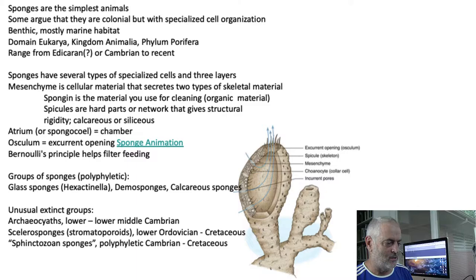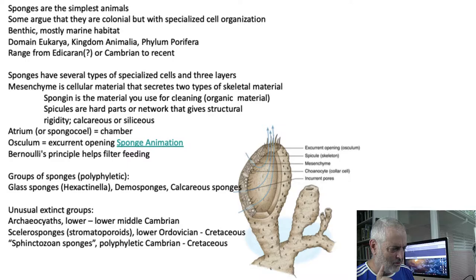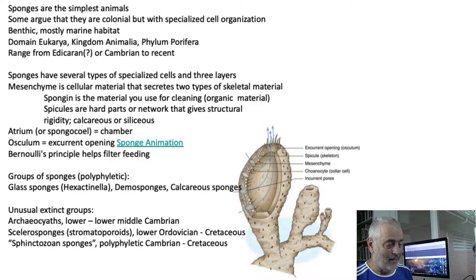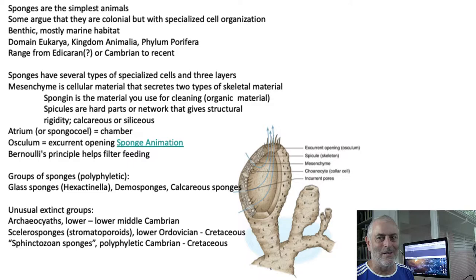Sponges are among the simplest animals. They are colonial with specialized organization, and they mostly live on the seafloor. There may actually be some freshwater sponges — I'm not quite sure. They belong to the eukaryotes; they're animals, not plants. They can have some algae growing around them or on them, but usually they don't like that because they like to filter feed. They belong to a phylum called Porifera, meaning porous — sponge-like.